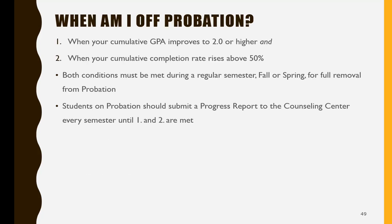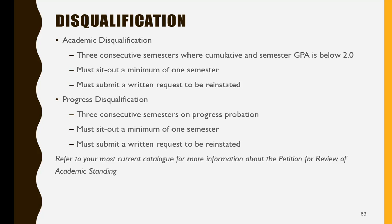The good news is you can get off probation. You will be removed from probation once your GPA improves to a 2.0 or higher, and/or when your completion rate rises above 50%. Both conditions must be met during fall or spring semester for full removal from probation. Students on probation should submit a progress report to the Counseling Center and see a counselor every semester until your GPA is 2.0 and your cumulative completion rate rises above 50%.